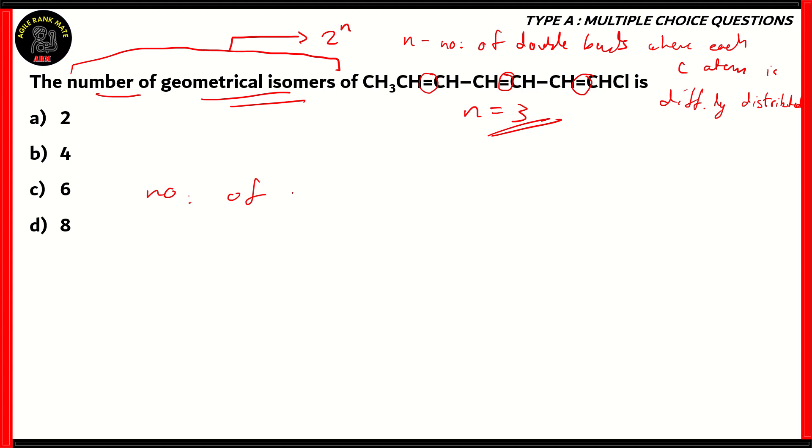So therefore, the number of geometrical isomers is 2 raised to N, which is 2 raised to 3. 2 cubed turns out to be 8. You can multiply that in order to make sure. Therefore, option D, 8, is the correct answer.